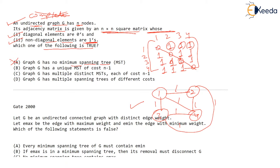Option B: graph G has a unique minimum cost spanning tree of cost n minus one. Now check the word 'unique.' This graph has many minimum cost spanning trees. For example, connect one and two with weight one, one and three with weight one, and three and four with weight one. You can't add any more edges — there will be a cycle. The total cost is three: one plus one plus one. In a four vertex graph you can add only three edges, each with weight one, so three will be the cost. But this is not the only tree. They are saying there will be a unique minimum cost spanning tree — that is not the case.